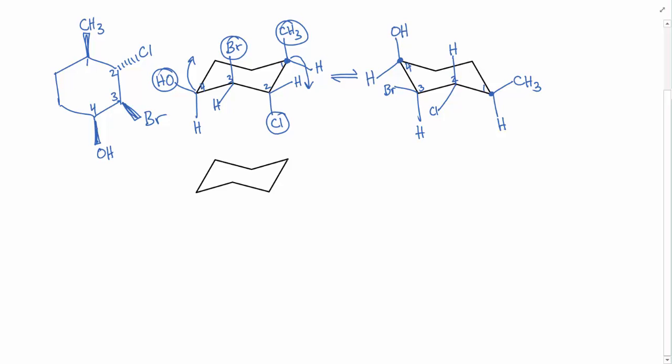So here in the top one, I picked an up point as carbon number 1. To draw the chair flip in the same chair shape, so this same shape as a base, we just need to pick a down point as number 1. So let's choose this down point here as number 1 and number the carbons. 1, 2, 3, 4.